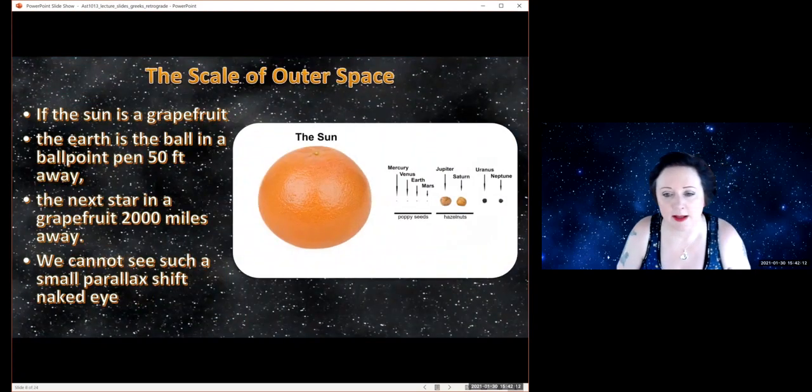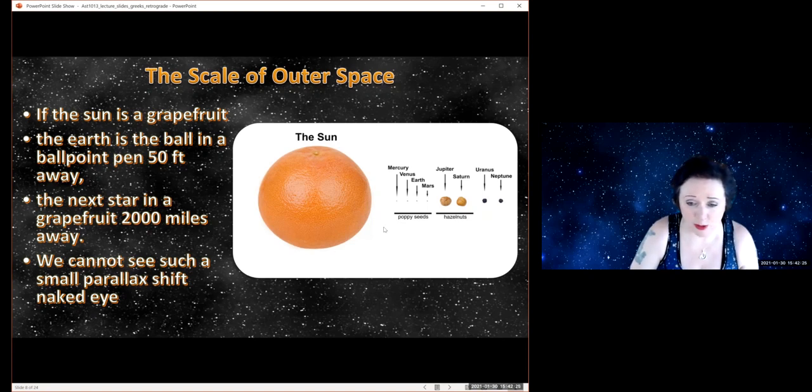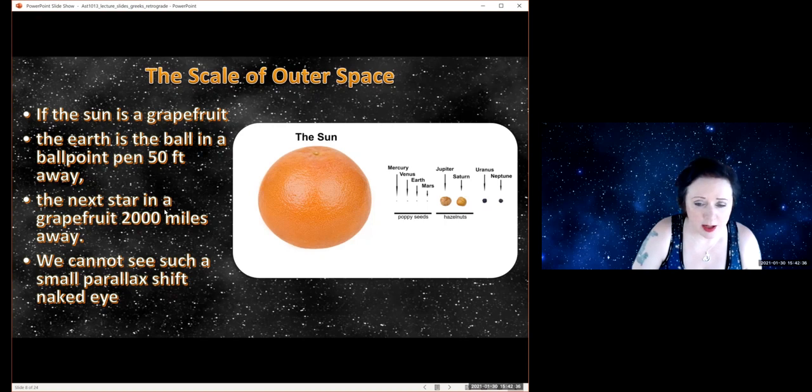The problem is that the nearest star is really a long way. If we consider the sun to be a grapefruit, then the Earth is essentially the size of the ball in a ballpoint pen, and it's 50 feet away. Here I've got a graphic, but this isn't to scale. The Earth is a poppy seed, that's right for the size, but it would have to be 50 feet away from this grapefruit. And the next star is a grapefruit that's 2000 miles away. So that angle, the shift that you see, is so small that we cannot see it with the naked eye.